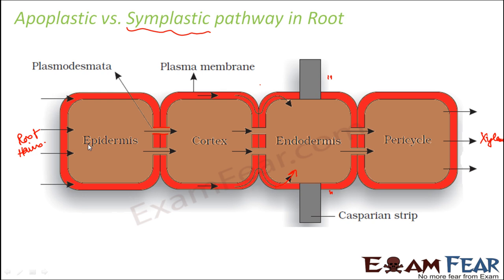So please understand the difference clearly. When we talk about apoplast, 'apo' means away from, so it will be away from cytoplasm — it moves through the cell walls, through the boundaries, but only until the casparian strip. As soon as it reaches the endodermis, it directly jumps into the cytoplasm, and beyond that it starts behaving like the symplast pathway. In the symplast pathway, it flows directly through the cytoplasm and crosses the plasma membranes via the plasmodesmata. When compared, the symplastic pathway is a slower process than the apoplast because it has to cross the plasma membrane.